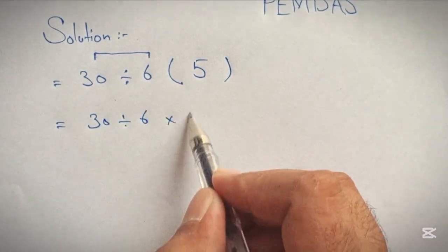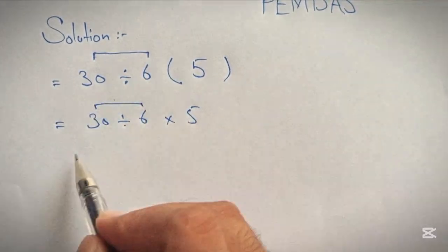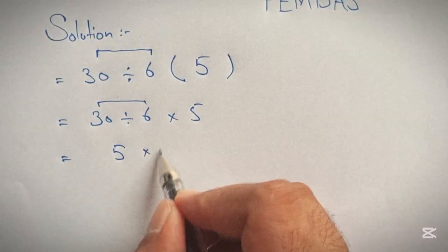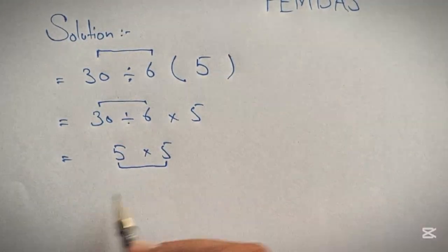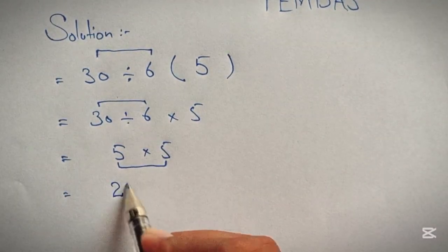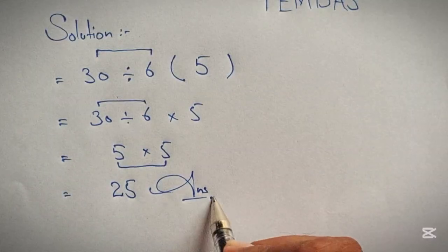So, 30 divided by 6 equals 5. Here, 5 times 5 equals 25. Done. So, our final answer to this problem is 25.